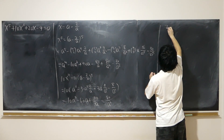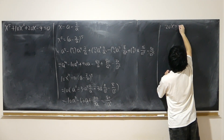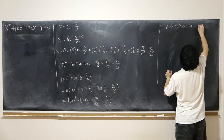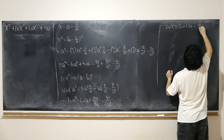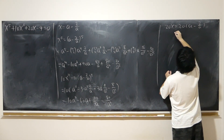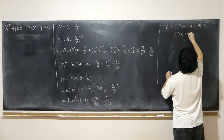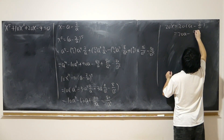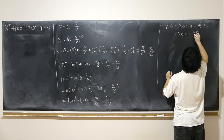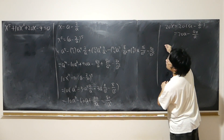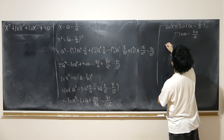Next, 20x equals 20 times (a minus 2 over a), which gives 20a minus 40 over a. And don't forget the minus 4 term.